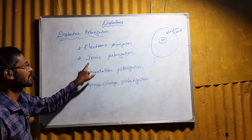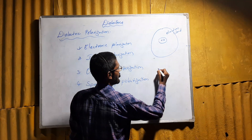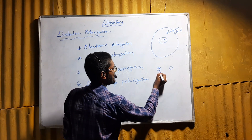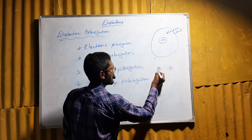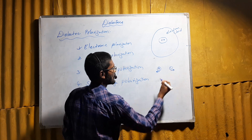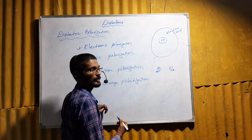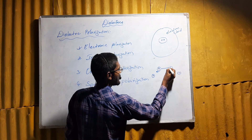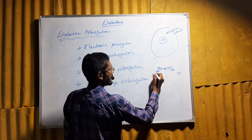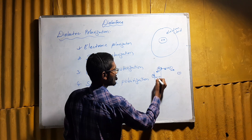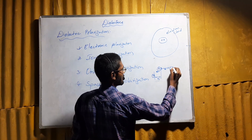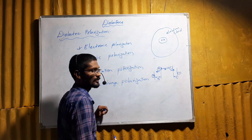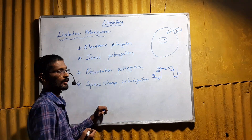In ionic polarization, some materials contain a positive ion and a negative ion. When you apply some electric field, there will be displacement of the positive ion and negative ion away from each other. The positive ion is displaced by a distance x1 and the negative ion is displaced by a distance x2. This displacement produced in ionic materials is called ionic polarization.